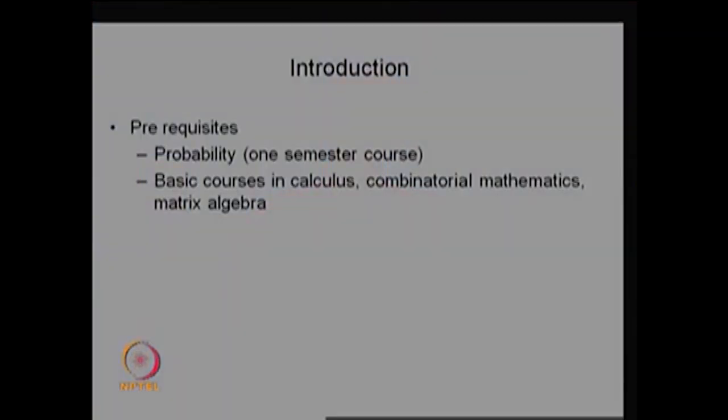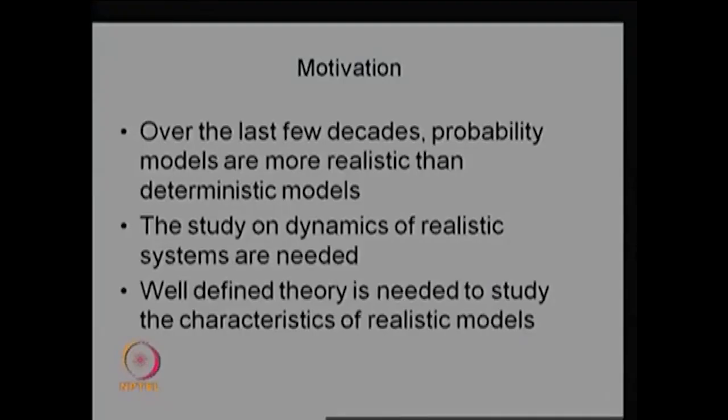Other than the probability course, we need a basic course in calculus and some mathematical background in combinatorial problems and matrix algebra. These topics would have been covered in Mathematics I or Mathematics II courses, and that is enough to understand the Stochastic Processes course. We need probability theory as well as Mathematics I and Mathematics II as prerequisites.